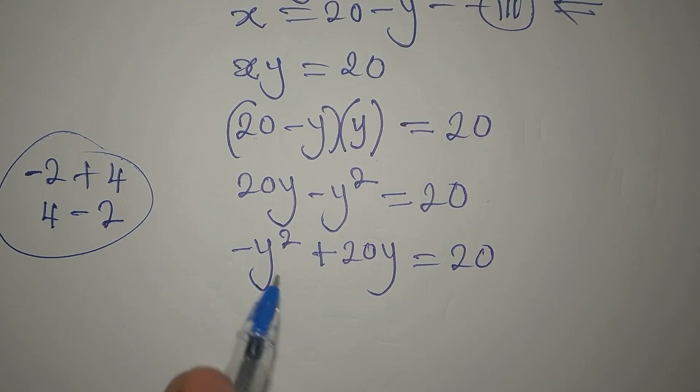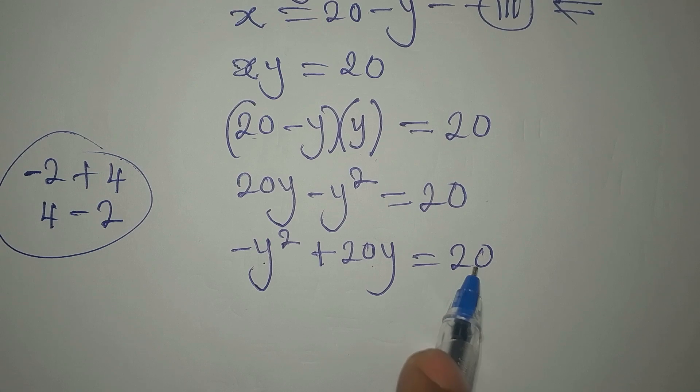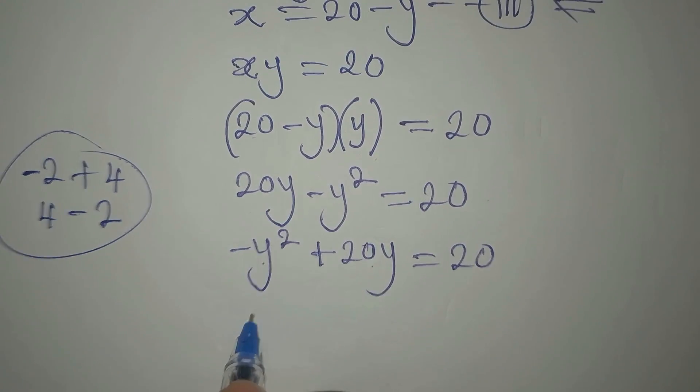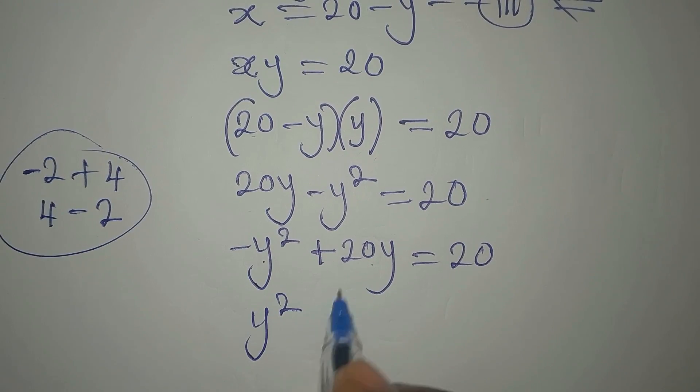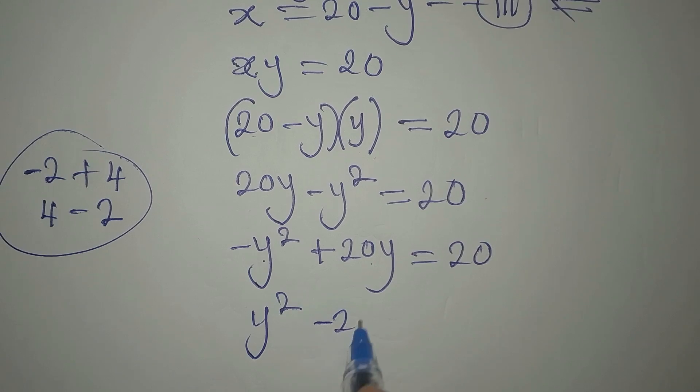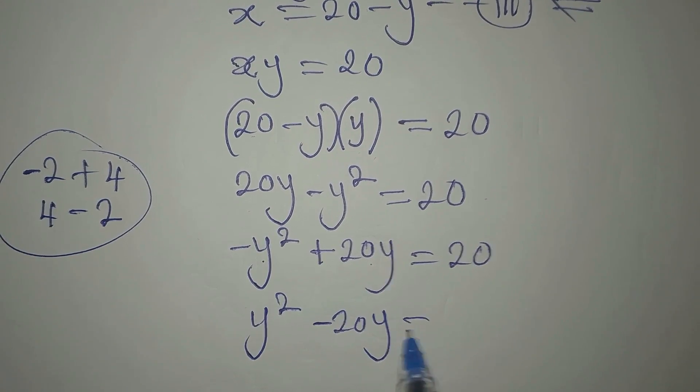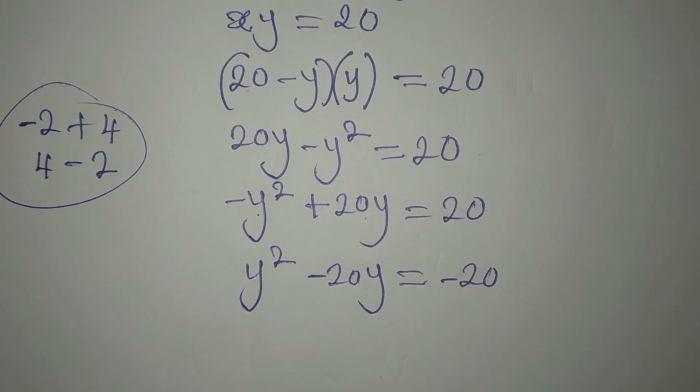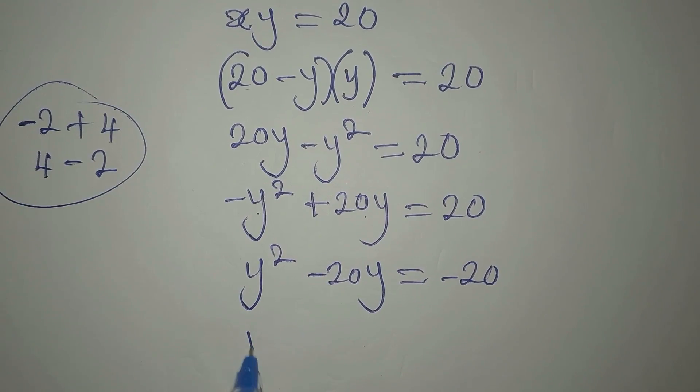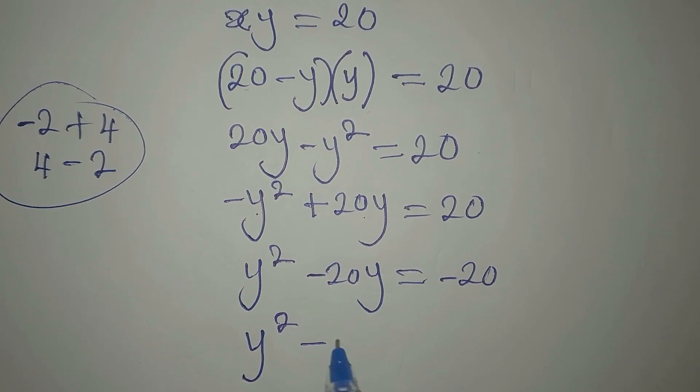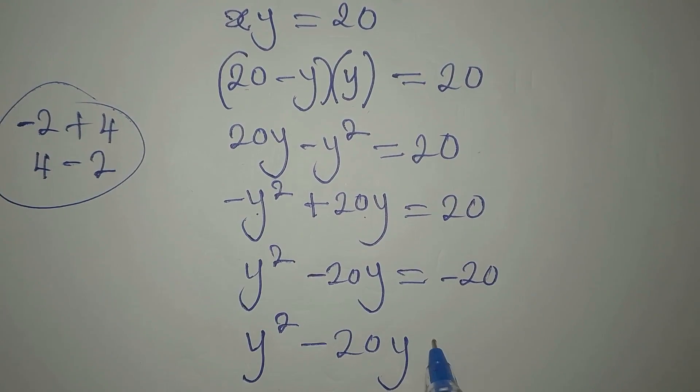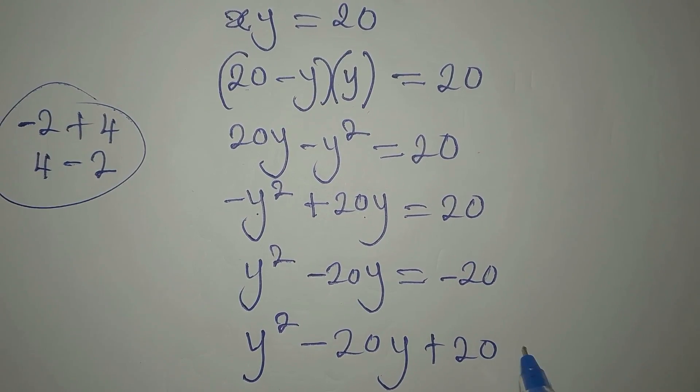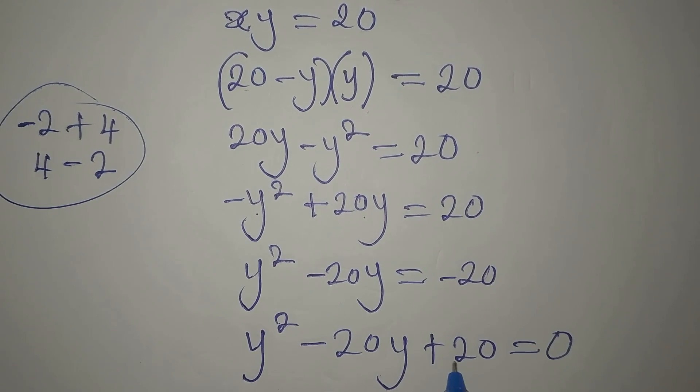From here now, let's make sure we remove this negative, so we multiply everything by -1. That will give us positive here to make this one to be -20y, and then it will make this to be -20. We're going to bring this to the left, so we have y² - 20y + 20 = 0.